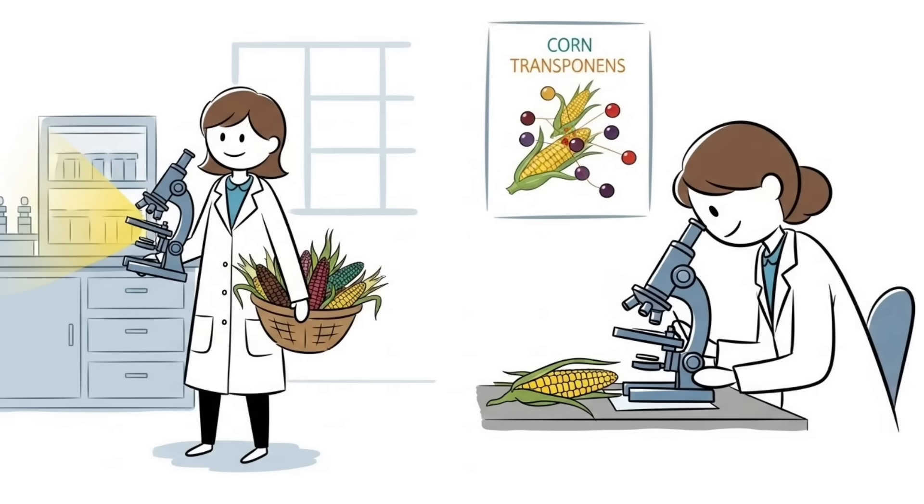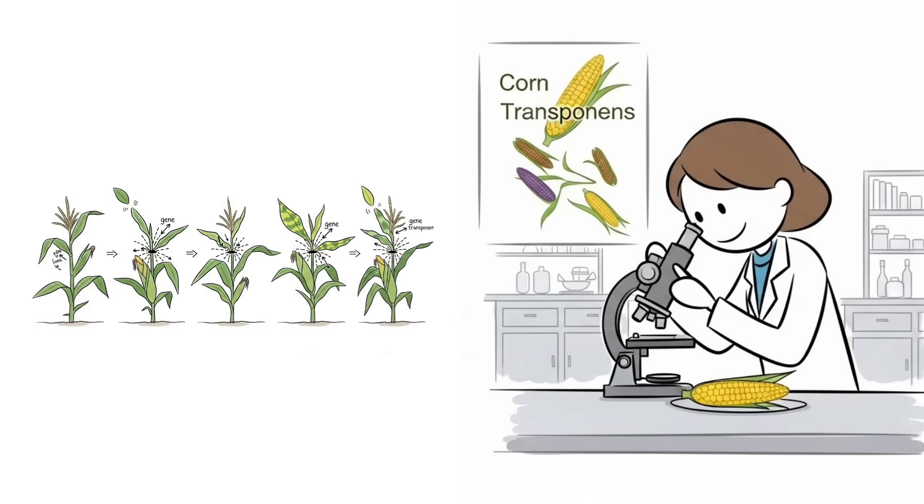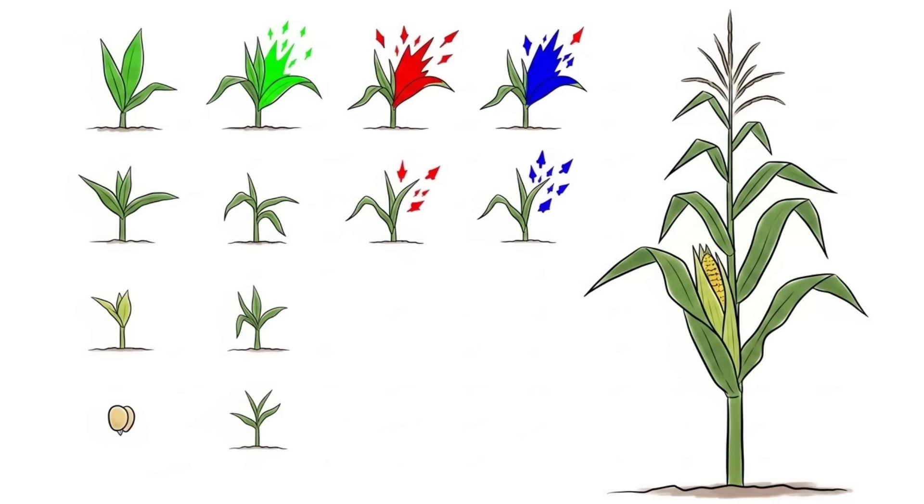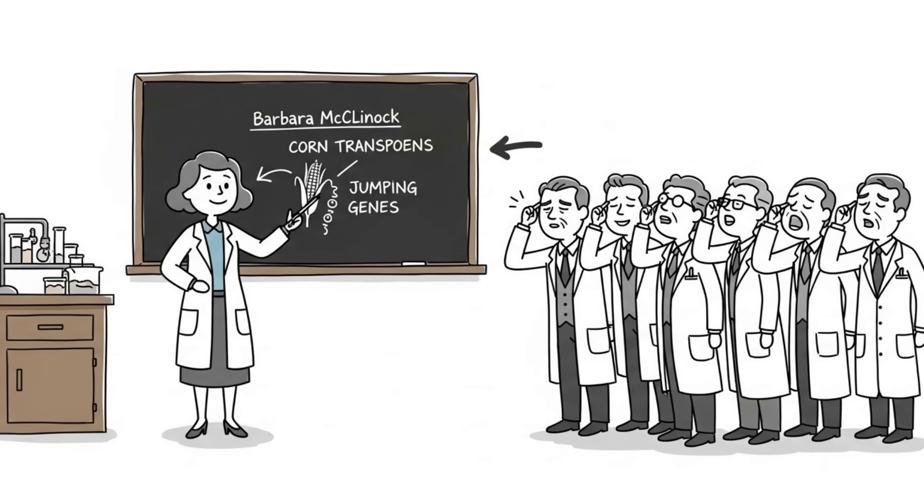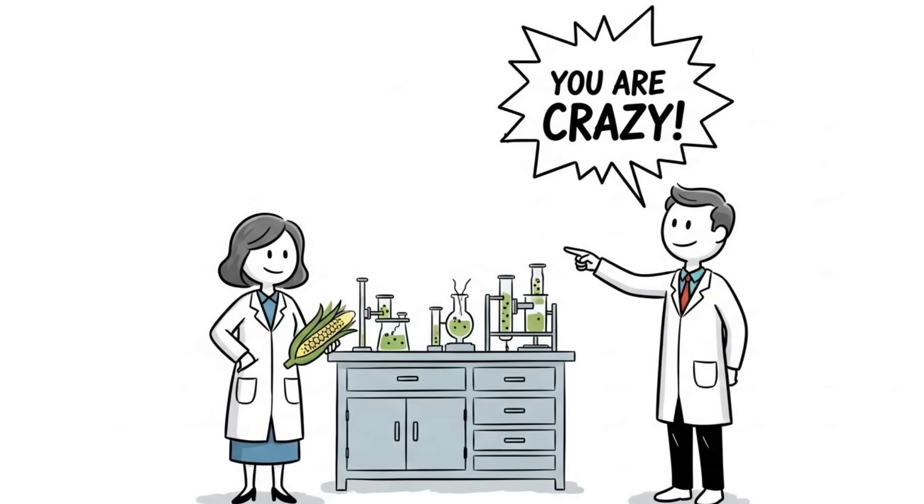While studying corn at Cold Spring Harbor Laboratory, she discovered that genes could actually jump around on chromosomes, changing how organisms develop. The scientific community rolled their eyes. One colleague even called her crazy to her face.